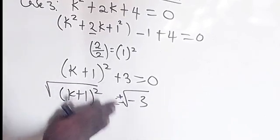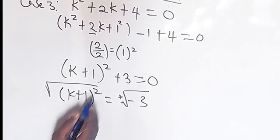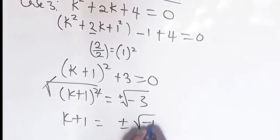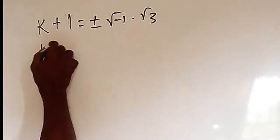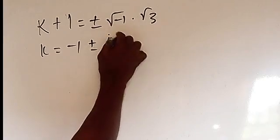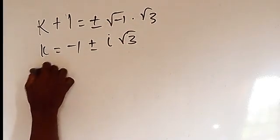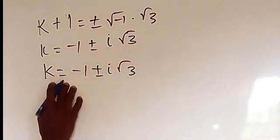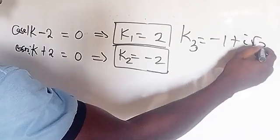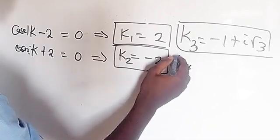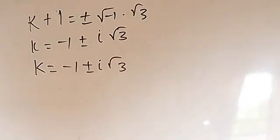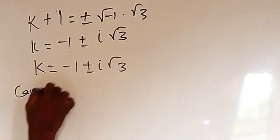Inside the parentheses is (k + 1)², and minus 1 plus 4 gives plus 3. So (k + 1)² = minus 3. Taking square roots of both sides: k + 1 equals plus or minus √(minus 3), which is plus or minus i√3. Therefore k₃ equals minus 1 plus i√3 and k₄ equals minus 1 minus i√3.